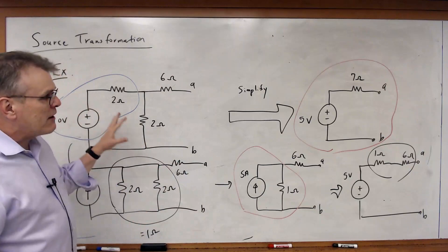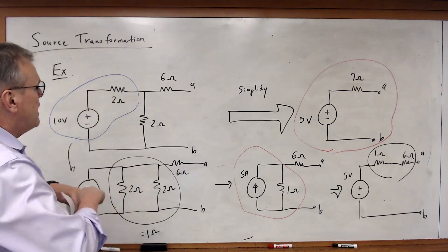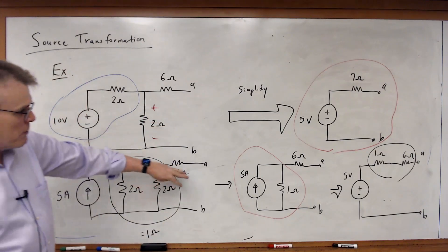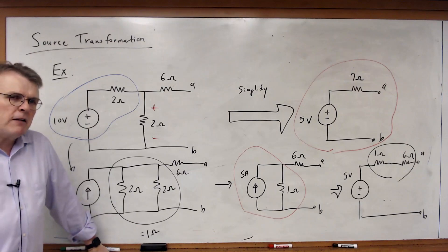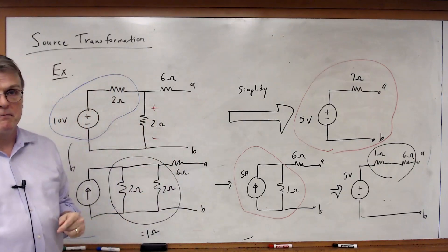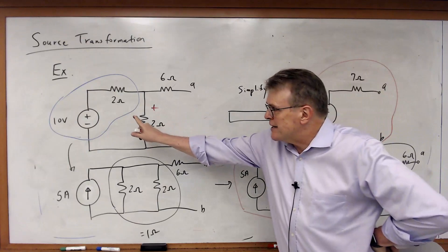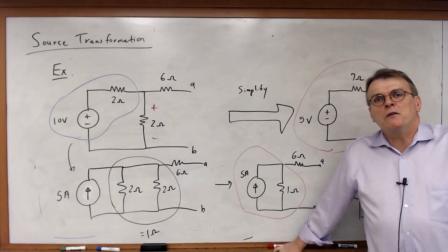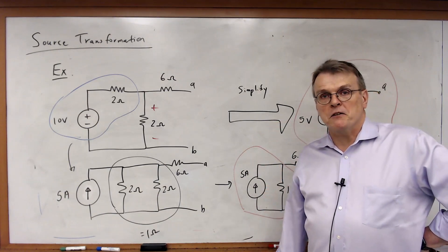The problem is I can't do this trick with a dependent source. If a dependent source is a function of the voltage across a resistor, and that resistor disappears through the transformation, I lose the variable and the dependent source has no meaning. So source transformation works very nicely for independent sources, but not for dependent ones. If you do have dependent sources, you can still perform this transformation using a more advanced technique called Thevenin's Theorem, which we'll see next time.